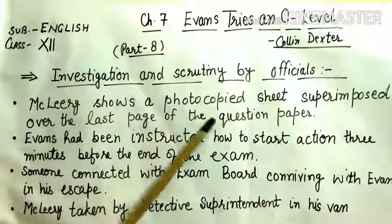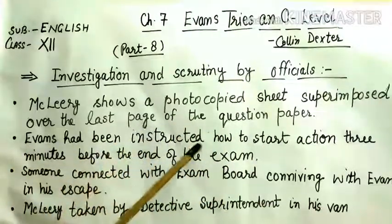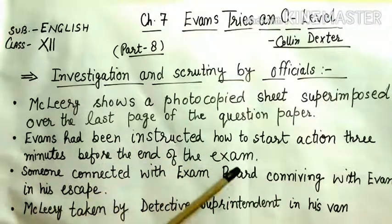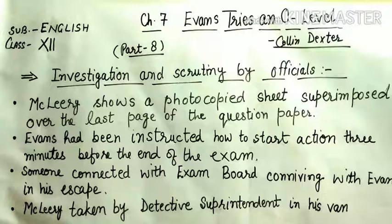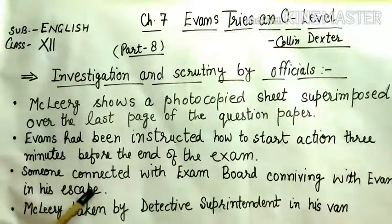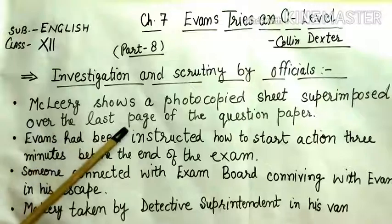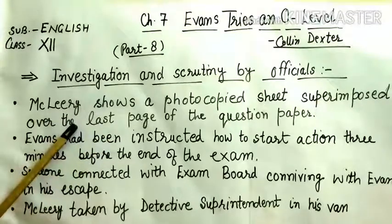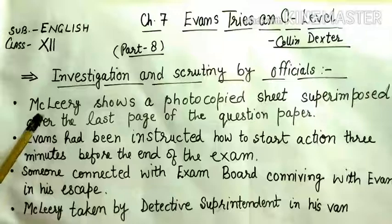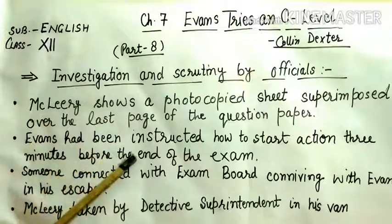McLeary shows a photocopied sheet superimposed over the last page of the question paper, and Evans had been instructed how to start action 3 minutes before the end of the exam. The wounded man in Evans's cell, whom everybody thought to be McLeary, tells the prison authorities not to worry about him. He desperately and restlessly tells the governor about the photocopy — the photocopied sheet superimposed over the last page of the question paper, originally a blank page where a few words were written in German.